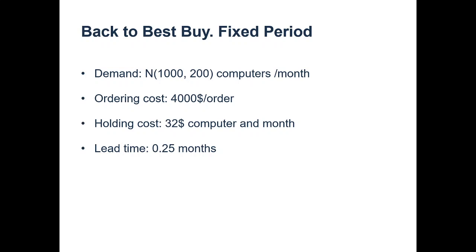Let's recall that we have a demand following a normal distribution of 1,000 computers on average and a standard deviation of 200 computers per month. Every order costs a fixed cost of $4,000 no matter how many computers we order, and the holding cost is $32 per computer per month. The lead time of our supplier is one week, which is roughly 0.25 months.